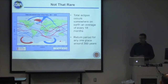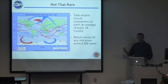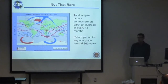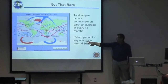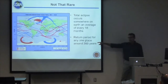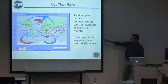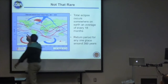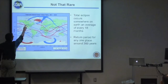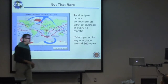But they're really not that rare. On average, a total eclipse occurs somewhere on Earth every 18 months. For any one place, the return period is around 360 years. NASA has a great resource on their website with maps by decade going back thousands of years in the past and even thousands of years into the future showing where eclipse paths will occur. This map from 2000 through 2020 shows the path starting up in the Pacific Northwest and exiting the country around Charleston, South Carolina.